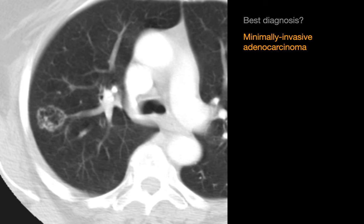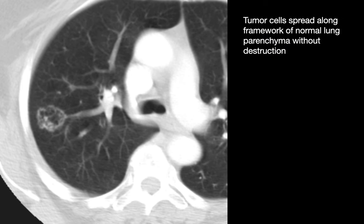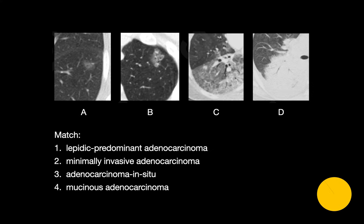With minimally invasive adenocarcinoma, tumor cells spread along the framework of normal lung parenchyma without destroying it, which is one reason why air bronchograms are still visible in some minimally invasive adenocarcinomas since the tiny airways within the tumor remain intact. Images A, B, C, and D represent examples of the four subtypes of lower-grade lung adenocarcinomas.